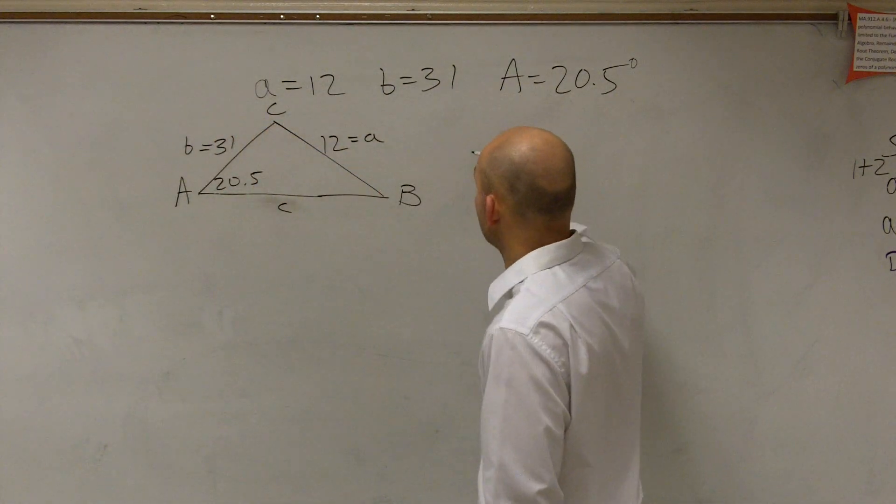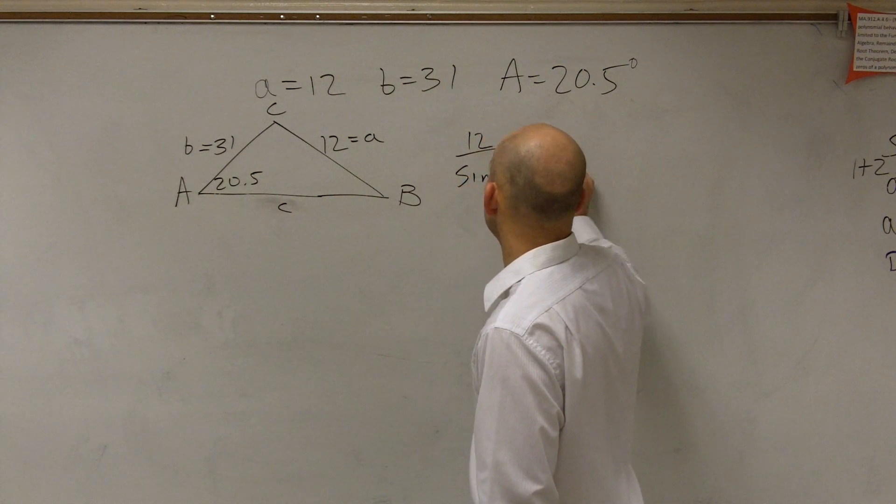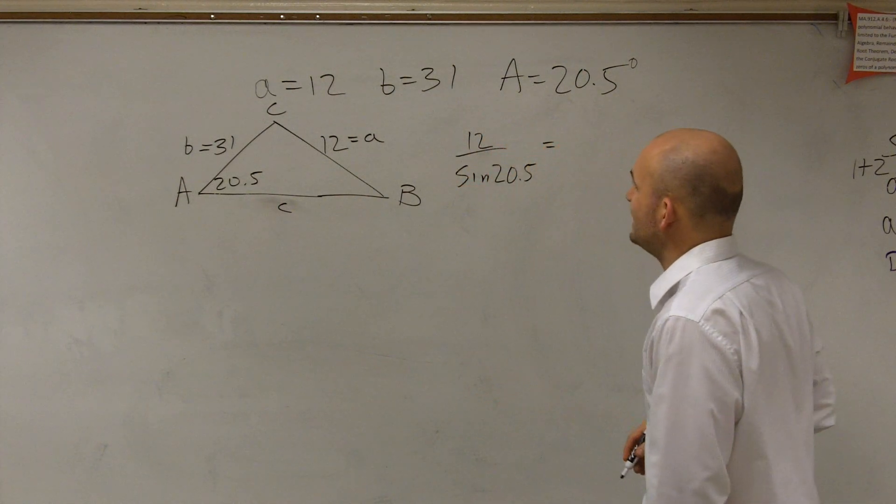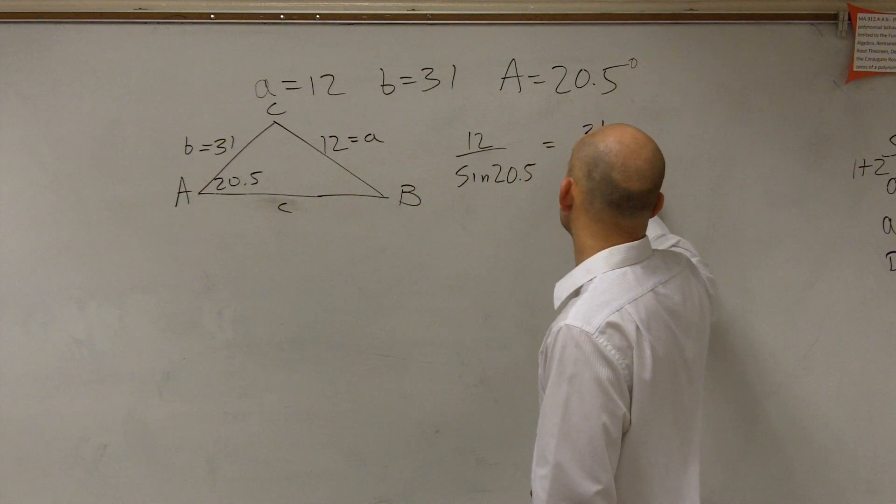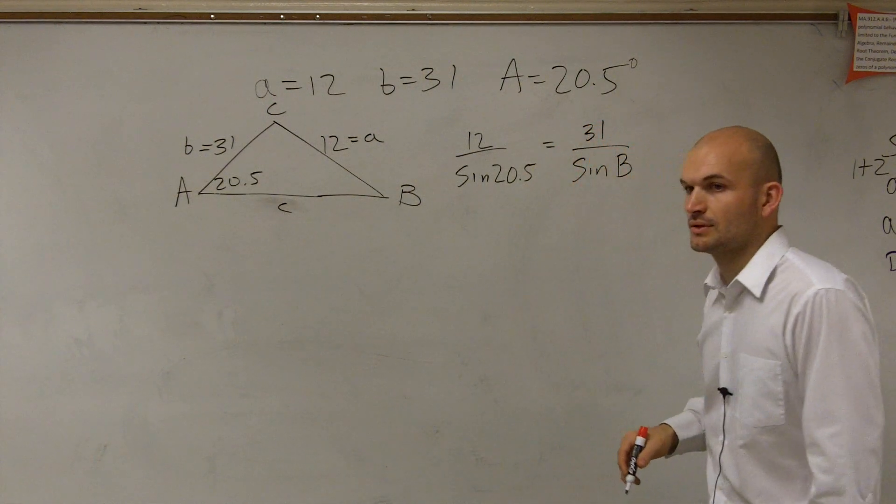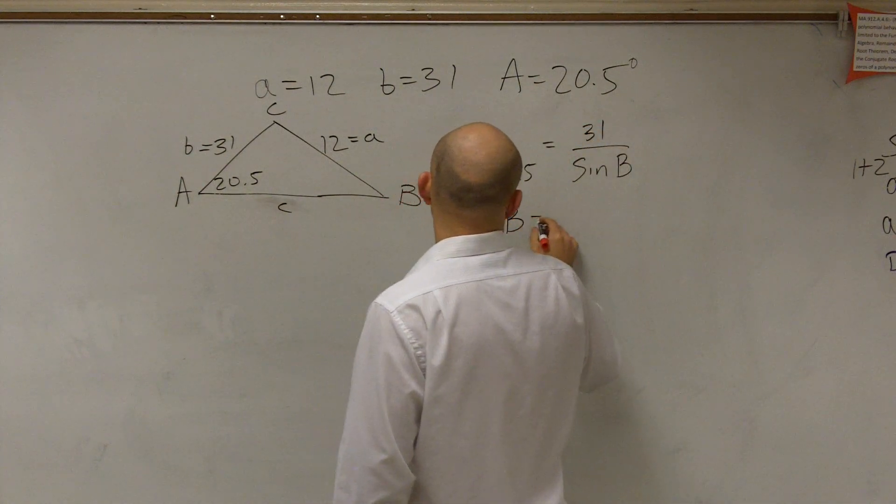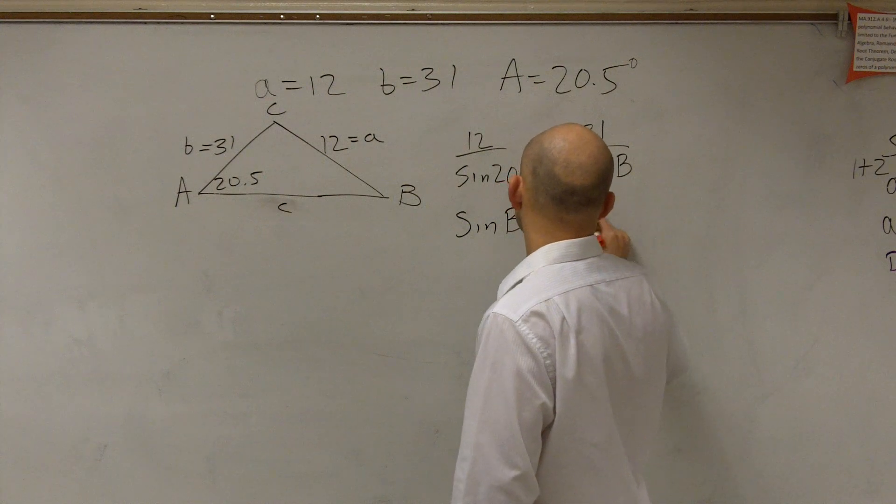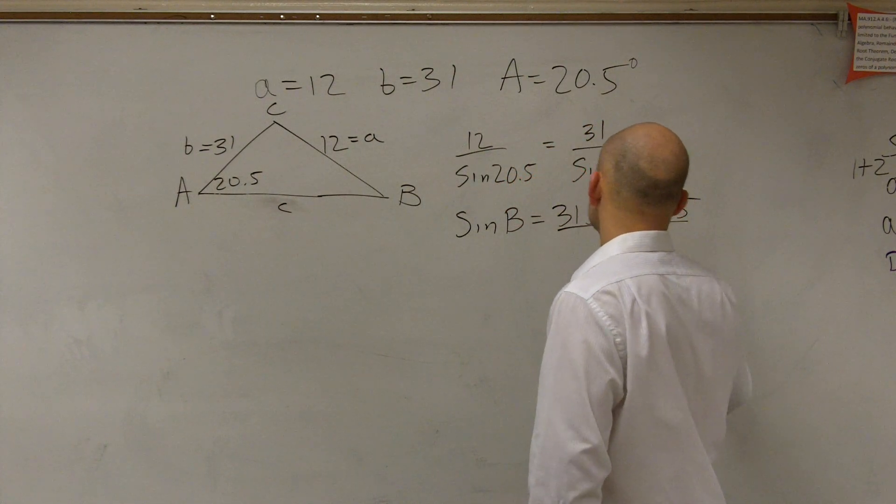For at least our first angle B. So we have 12 over the sine of 20.5 degrees is going to equal 31 over the sine of B. So now, go and solve.